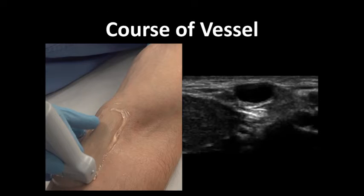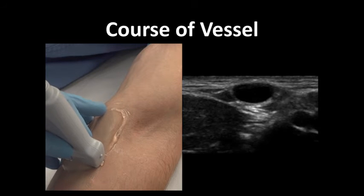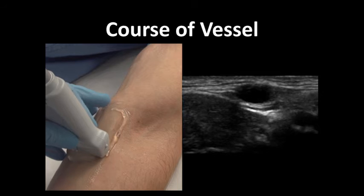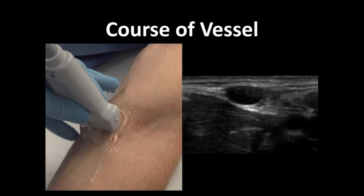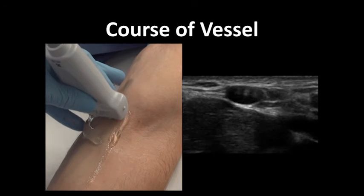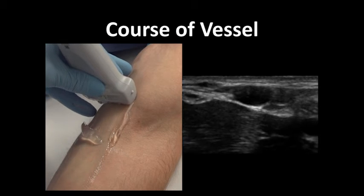Occasionally, clinicians fail to pass a catheter in a vein because, despite getting a flash of blood, the vessel is too tortuous to allow passage of the plastic catheter. To avoid this, once you find the vessel of interest, scan up or proximally along the limb to ensure that the vein stays in the center of the screen and thus has a straight course for a few centimeters.